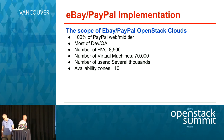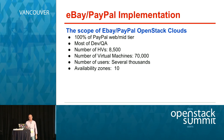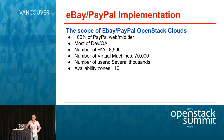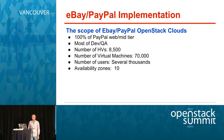I'm going to cover the scope of eBay and PayPal OpenStack implementations. PayPal web and mid-tier is running 100% in OpenStack. Most of the dev and QA clouds are running OpenStack. The number of hypervisors is 8,500 and growing rapidly. We have 70,000 virtual machines, all KVMs, spread across 10 or more availability zones. We also have several thousand users in dev and QA self-service clouds.